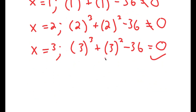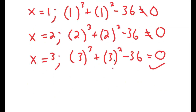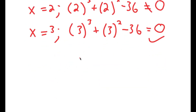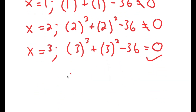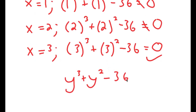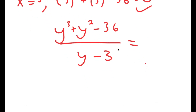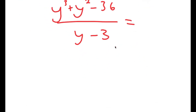So now that I have y equals 3 as a solution, what I have to do is divide y to the power of 3 plus y squared minus 36 by y minus 3. To divide these two, I'm going to have to use synthetic division. If you don't know what synthetic division is, I recommend watching a video on it.